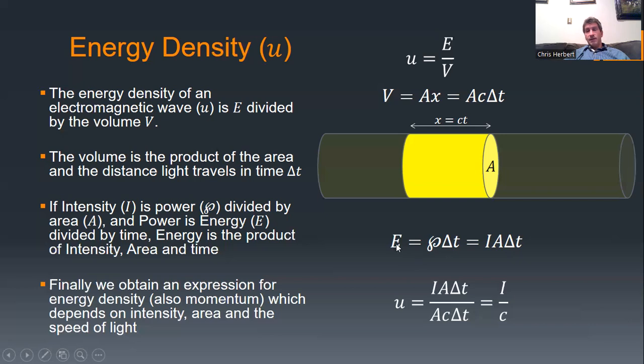The energy in this cylinder is represented by its intensity times its cross-sectional area times the time at which the light traverses this part of the beam. So energy density, how much energy I have per volume, equals Ia delta T. The volume equals the area times C times delta T. And this simplifies.